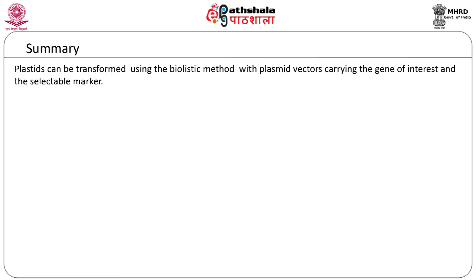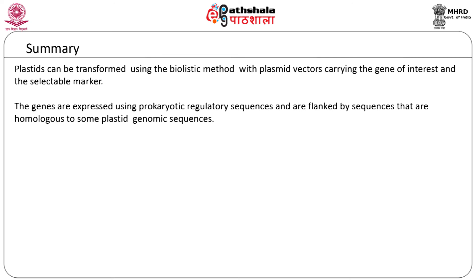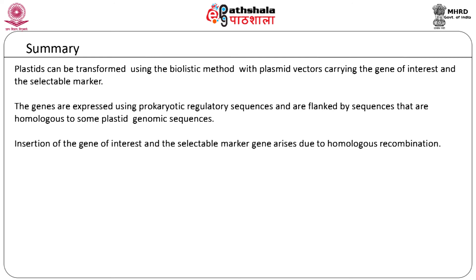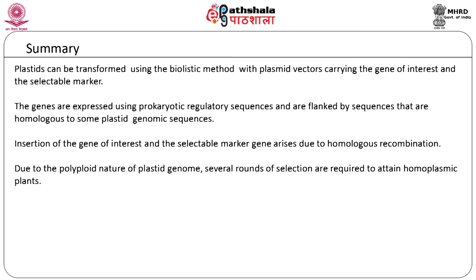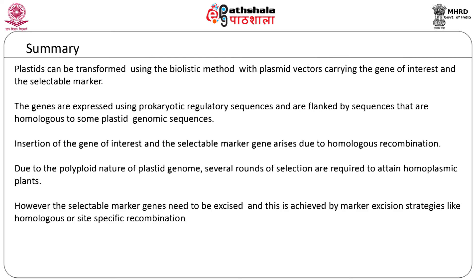The module can be summarized as follows: plastids can be transformed using the biolistic method with plasmid vectors carrying the gene of interest and the selectable marker. The genes are expressed using prokaryotic regulatory sequences and are flanked by sequences that are homologous to some plastid genome sequences. Insertion of the gene of interest and the selectable marker arises due to homologous recombination. Due to the polyploid nature of the plastid genome, several rounds of selection are required to attain homoplasmic plants. However, the selectable marker genes need to be excised, achieved by marker excision strategies like homologous or site-specific recombination.